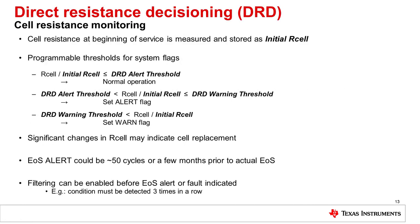The DRD approach uses the first R cell taken right when the cell is put into service and stores that in flash memory as the initial R cell value. After that, during operation, it periodically measures new R cell values and compares them as a ratio to the initial R cell, comparing those ratios to thresholds stored in the part. There is an alert threshold — if the ratio is below it, normal operation is assumed with no serious aging. If it passes the alert threshold but is below the warning threshold, an alert flag is set. After passing the warning threshold, a warning flag is set. As the cell ages over cycles, the R cell value generally increases steadily, triggering alert and then warning at the different thresholds.